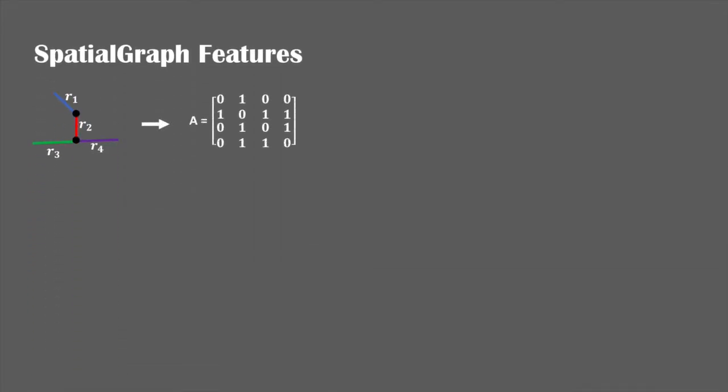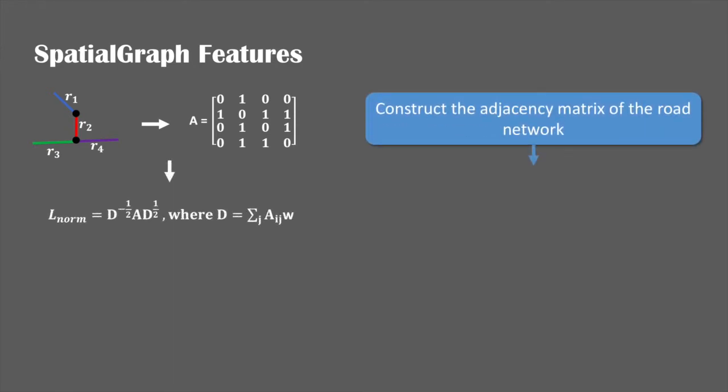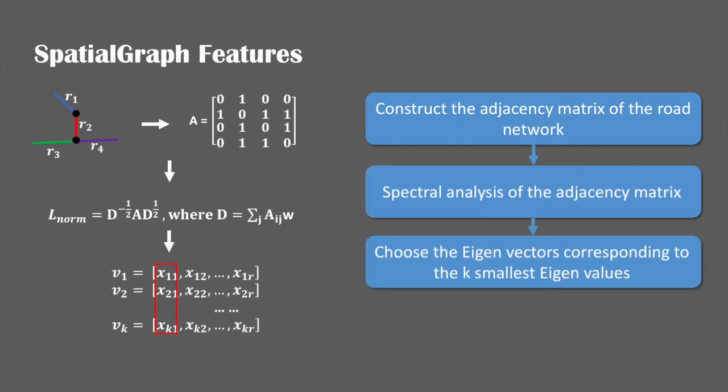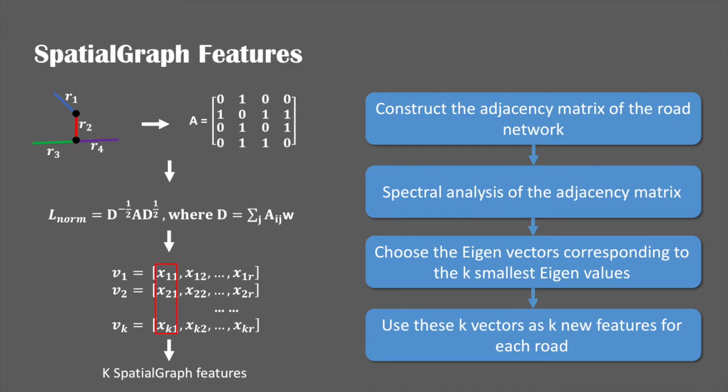To tackle the spatial heterogeneity, we firstly construct the adjacency matrix of the road network, and then conduct the eigenanalysis of the induced Laplacian matrix. We finally obtain the result in top eigen vectors as the new set of features.